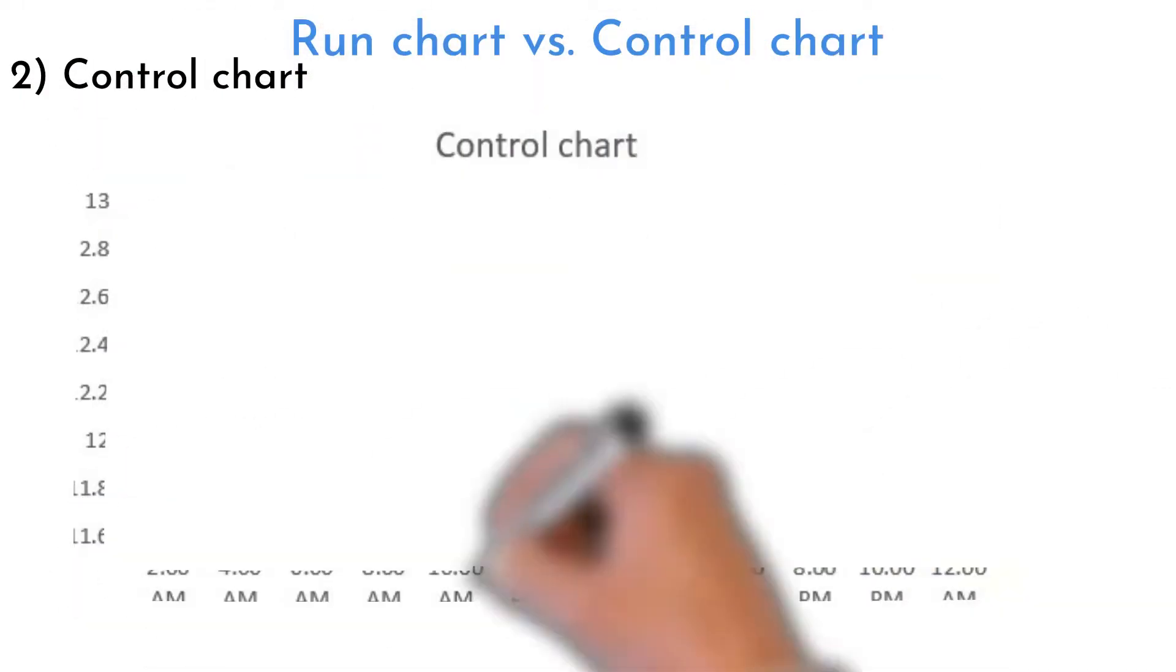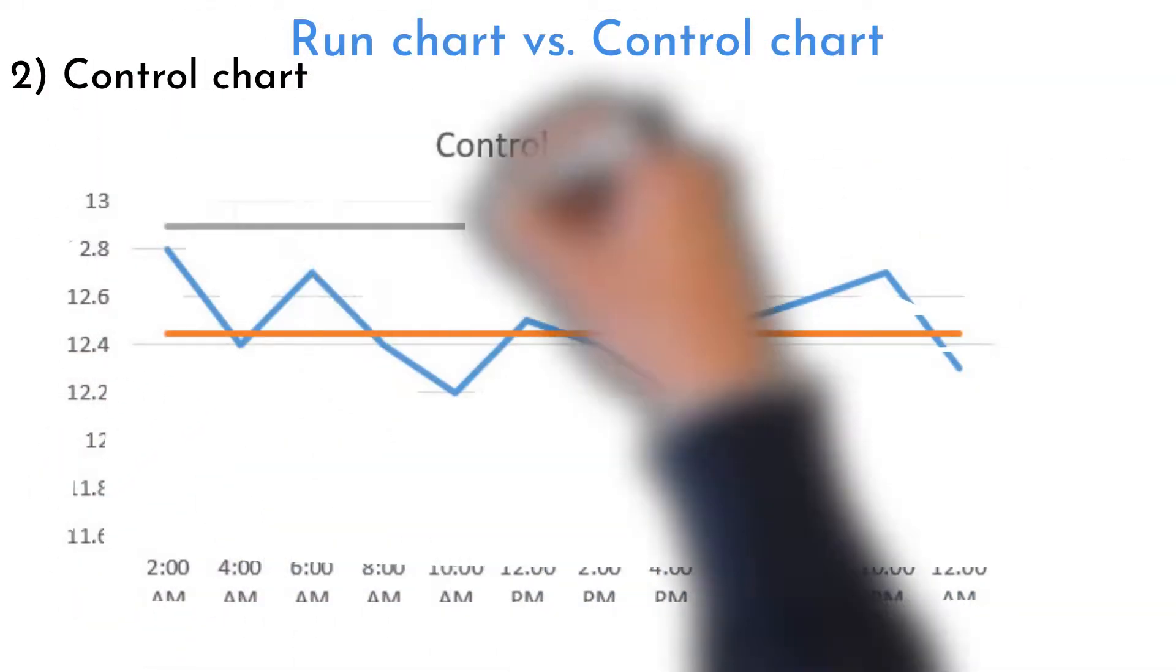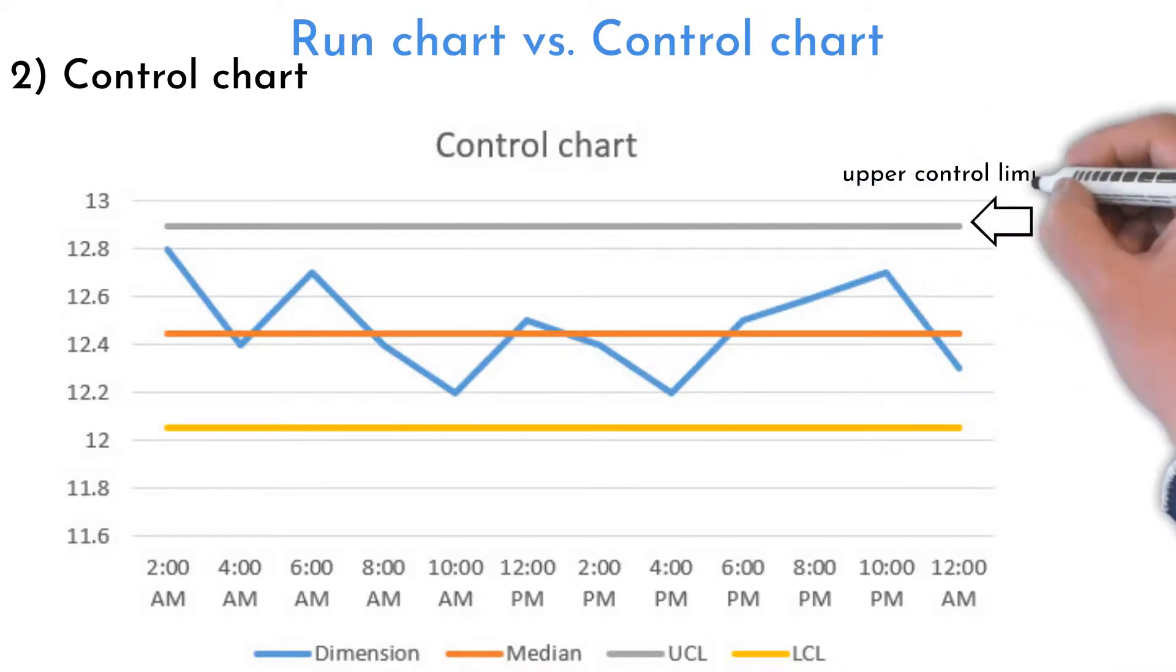Control chart data collection and visualization is equal to the run chart. There are two additional lines on top of run chart data: upper control limit and lower control limit.